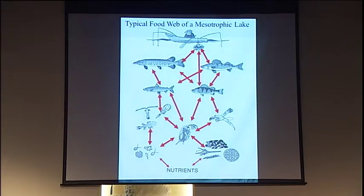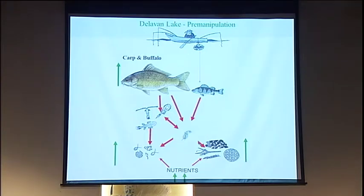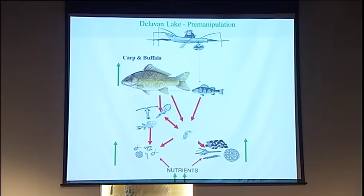That would fix the chemistry. But how about the biology of the system? A typical mesotrophic lake has a balanced food web: big fish eat the smaller fish, which eat the bugs — the zooplankton — which eat the phytoplankton, the little algae, which consume the nutrients. That's not quite what Delavan Lake had. Delavan Lake had lots and lots of big carp and very few of the piscivorous fish, and because of that we ended up with very small zooplankton. Small zooplankton aren't that efficient at eating phytoplankton, so we had a lot of algae in the lake given the amount of phosphorus in the system.